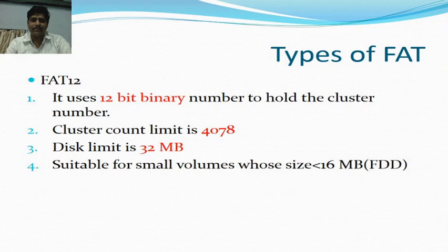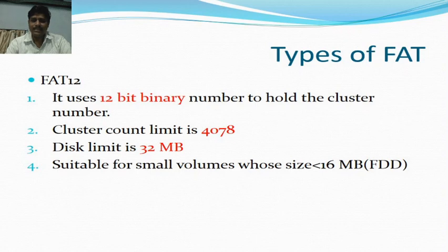There are different types of FAT. The first type is FAT12. It uses a 12-bit binary number to hold the cluster number. The cluster count limit is 4,078 and the disk limit is 32 MB. It is suitable for small volumes whose size is less than 16 MB, and is generally used for floppy disk drives.